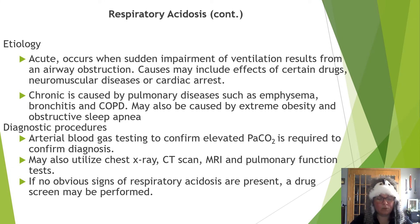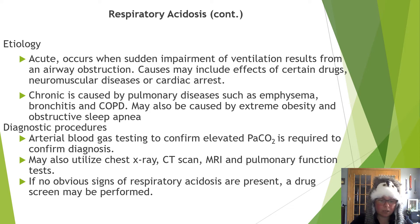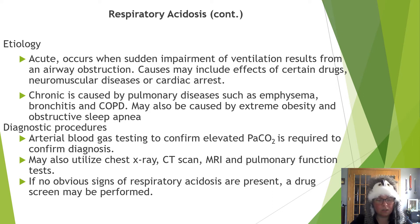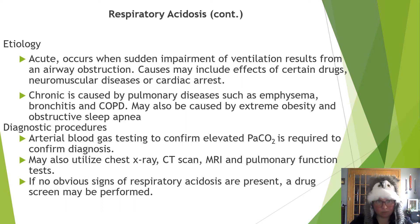Respiratory acidosis can be chronic or acute. If acute, it occurs when sudden impairment of ventilation results from airway obstruction due to certain drugs, neuromuscular diseases, or cardiac arrest. If chronic, it can be caused by pulmonary diseases such as emphysema, bronchitis, and COPD, or by extreme obesity and obstructive sleep apnea. Diagnosis uses arterial blood gas testing to confirm elevated PaCO2. Chest x-ray, CT, MRI, and pulmonary function tests supplement the diagnosis. A drug screen may be performed if no obvious signs are present.